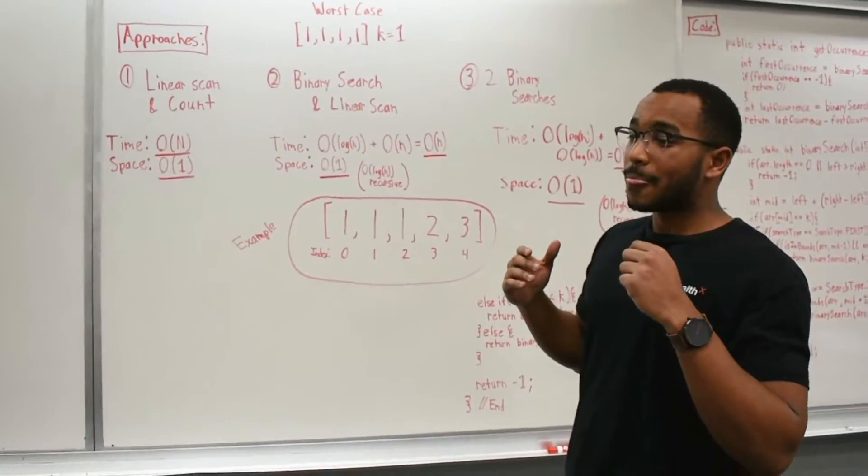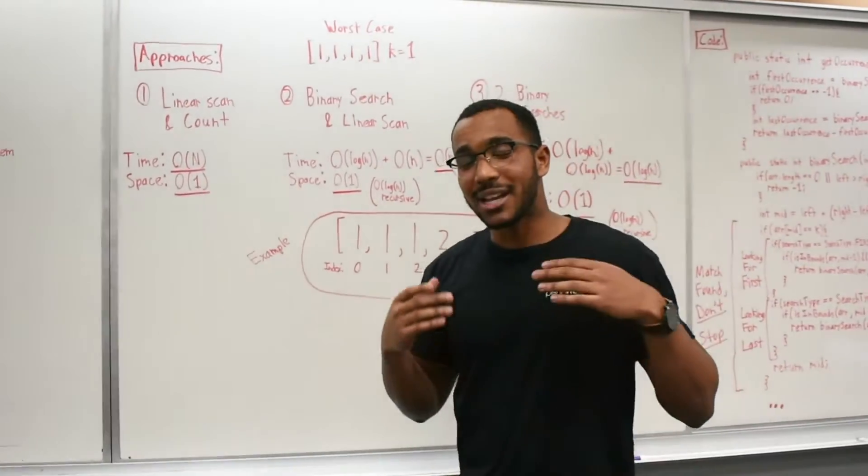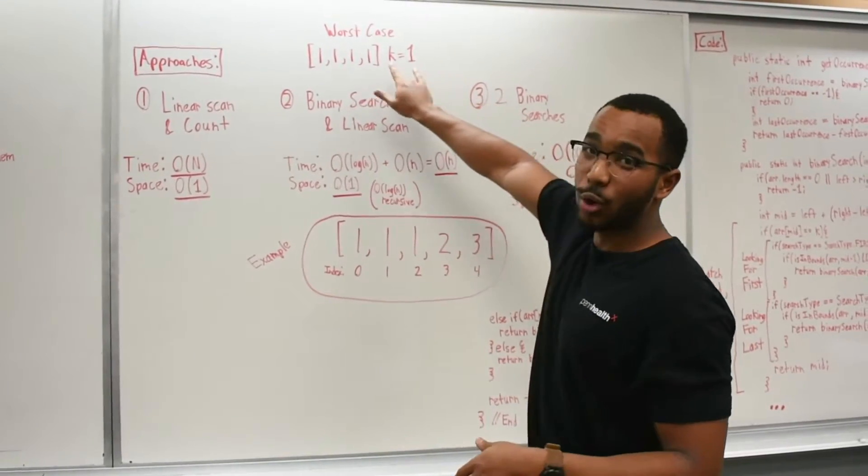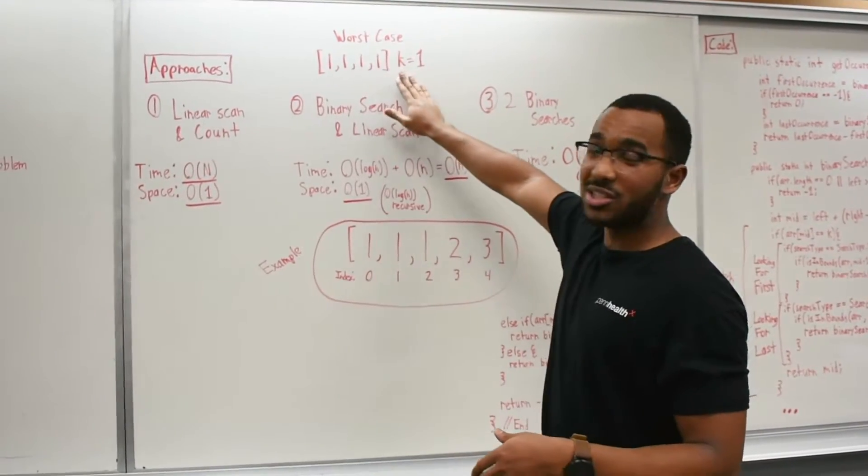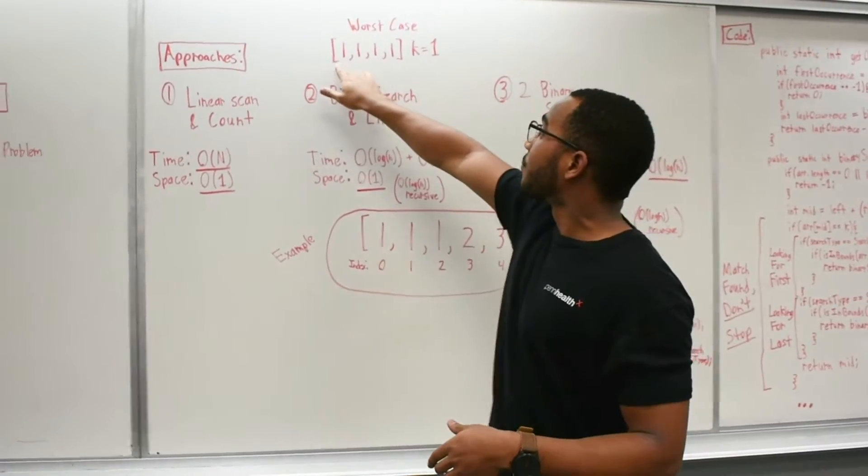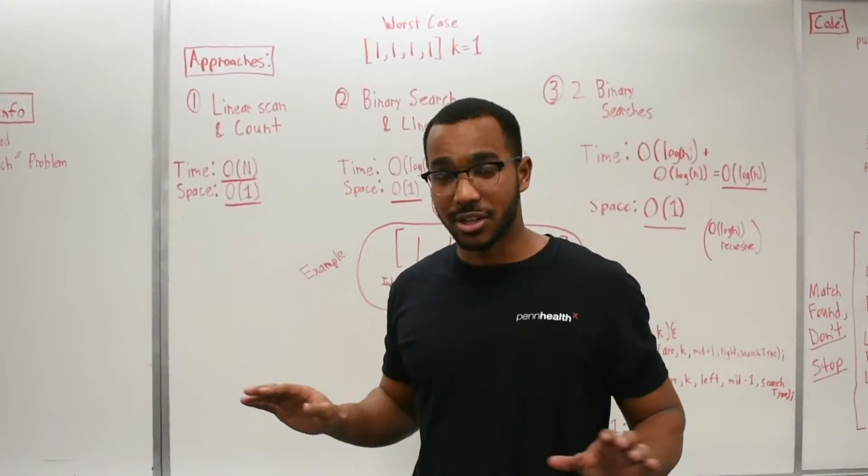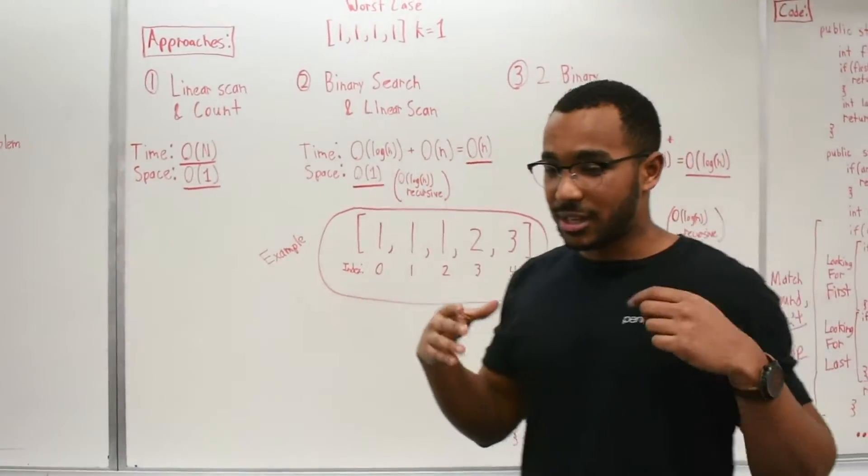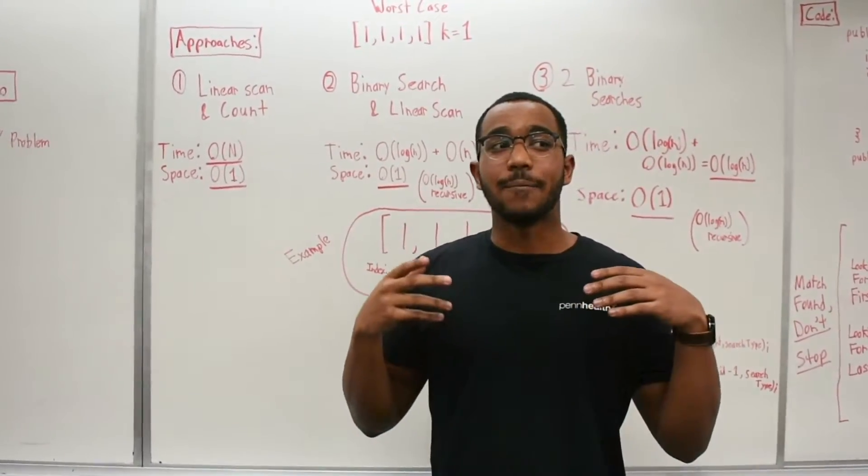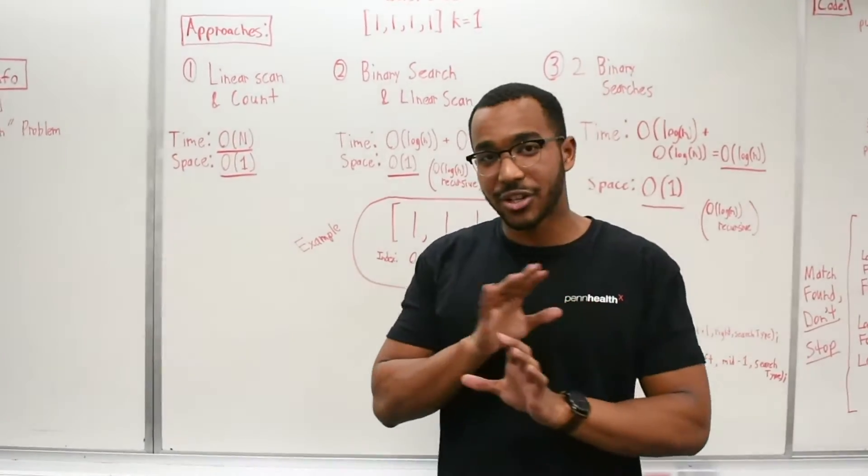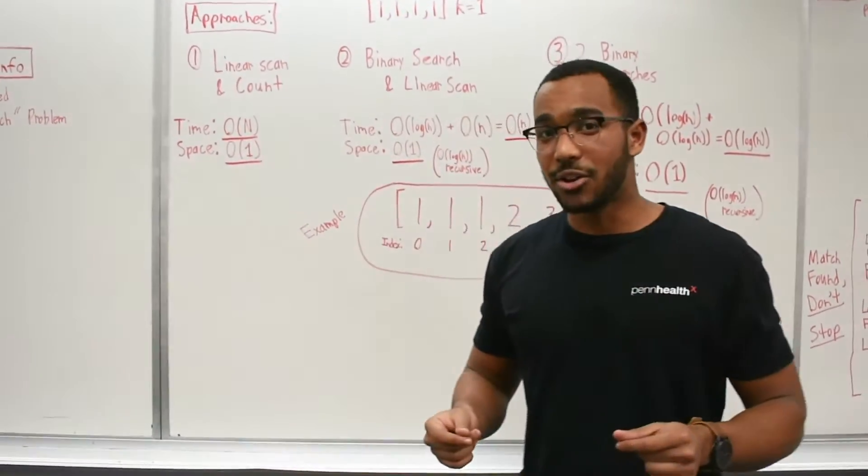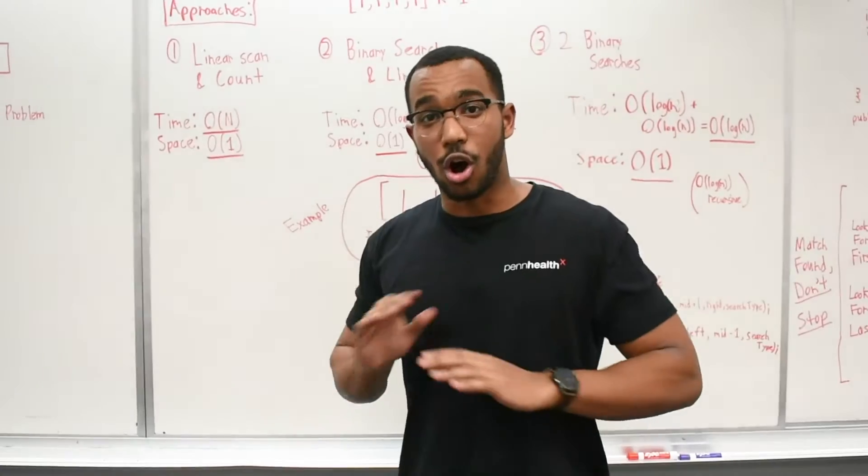So the thing is, this approach is okay, but it's not the best approach. Because if we have our worst case, if we have an array of all ones and K is 1, then we're going to be touching N elements. And automatically, our worst case becomes linear time. And then instantly, my interviewer told me, what if we could do this in log N time only? In average case, log N time. So instantly, I knew it had to be binary search all the way.